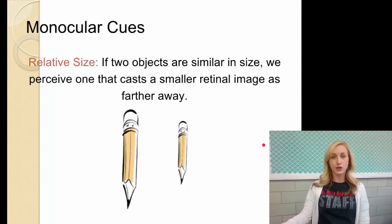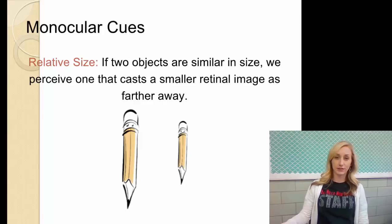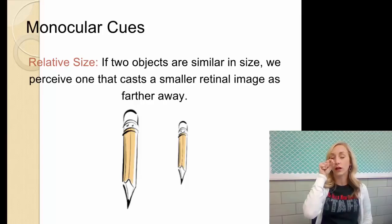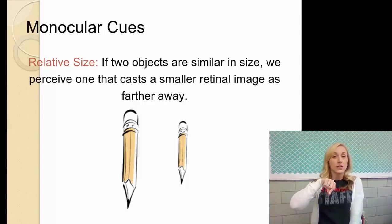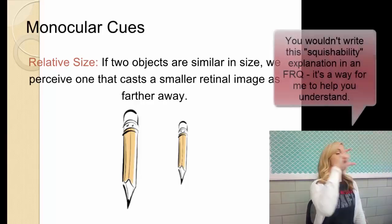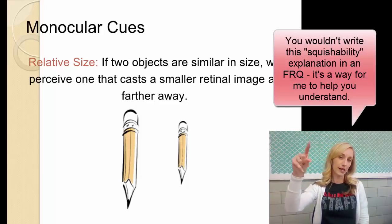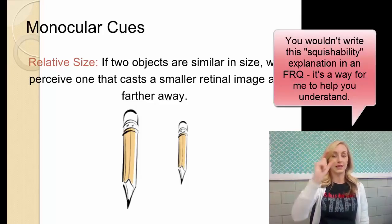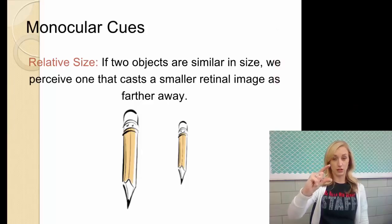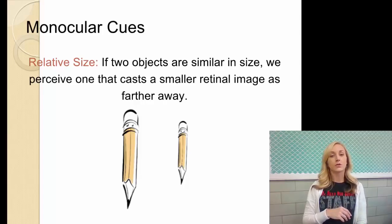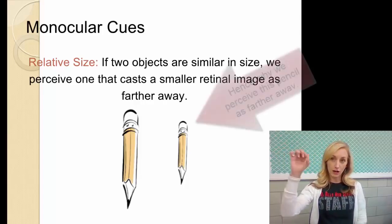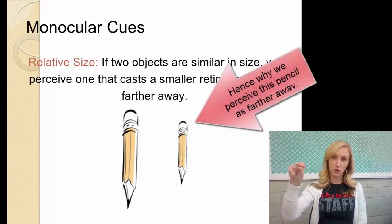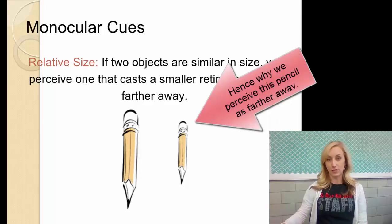Relative size. If two objects are similar in size, we perceive one that has a smaller retinal image as farther away. So this is the ability to squish someone who's far away. So if you see someone who's far away and you hold up your fingers and you squish them, you know that your friend is not this big in actuality. You know that they are actually five foot something tall probably. So the idea is that the smaller someone is, the more you're able to squish them, the farther away they appear.